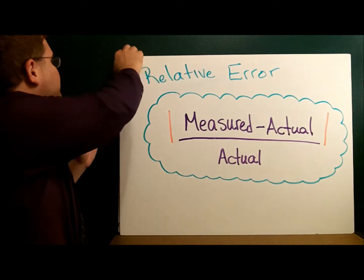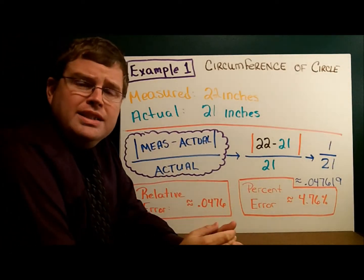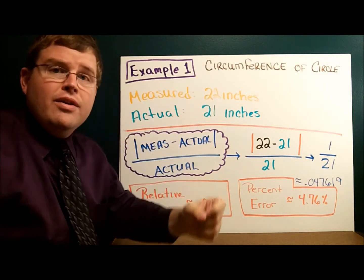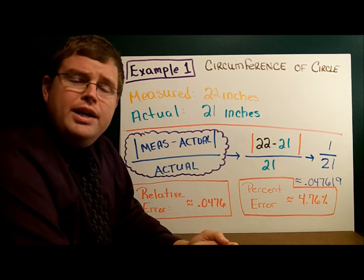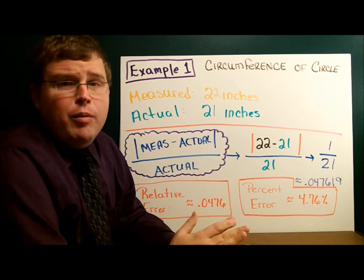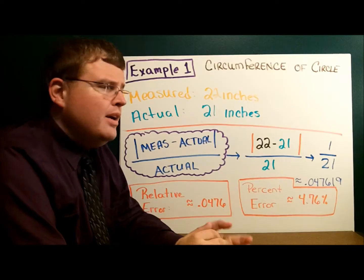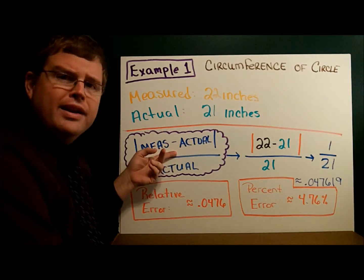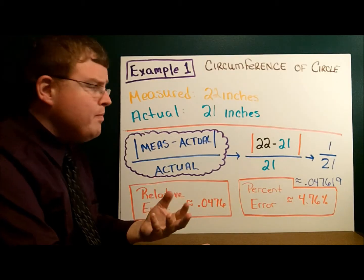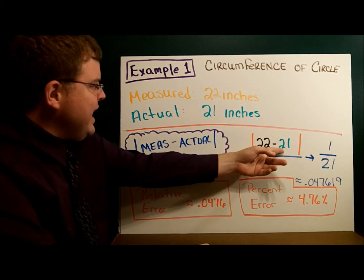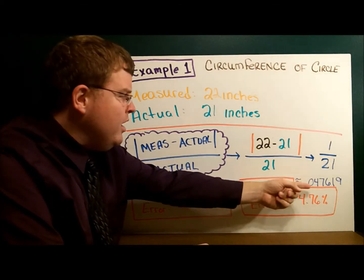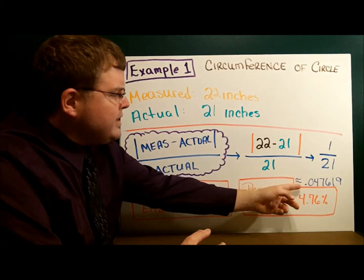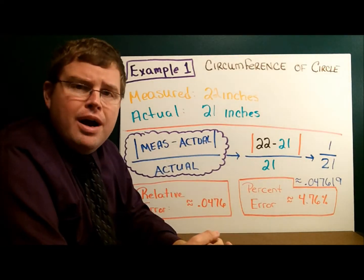In the first example, we have a circle and we're measuring the circumference — remember, circumference is the perimeter of a circle, the outer edge. We measured it to be 22 inches, but actually it was really 21 inches, so we were off by one inch. Let's see how significant that is using the relative error formula. Plugging in the numbers: measured minus actual over actual gives us 1 over 21, which is approximately 0.047619.